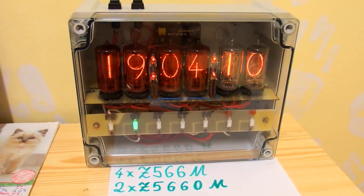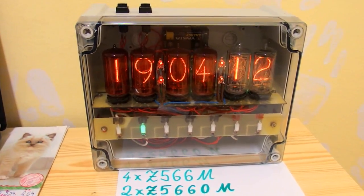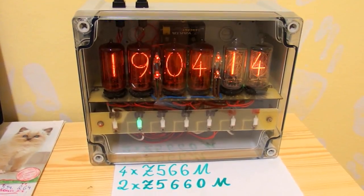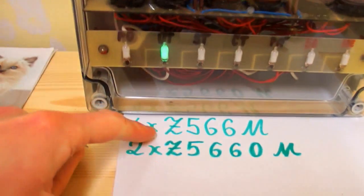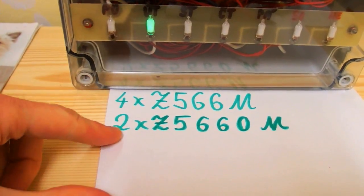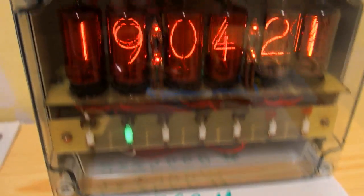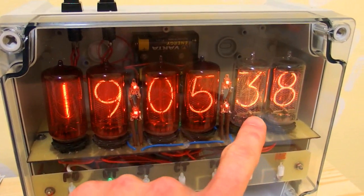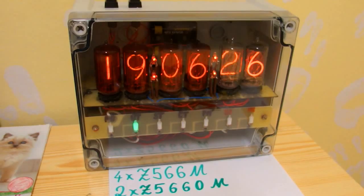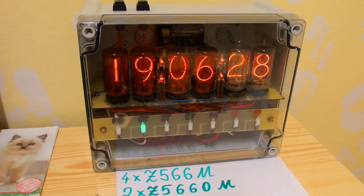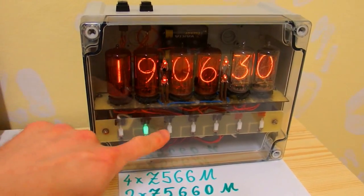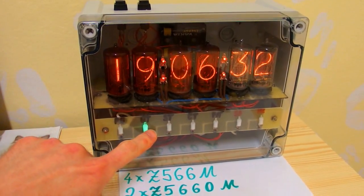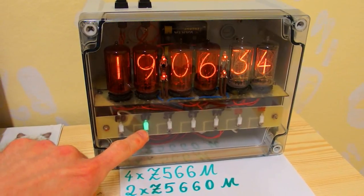And this is the second of my Nixie clocks and my biggest one. It has four times Z566M and two times Z566OM tubes. By and large they are the same tubes but the seconds have no red paint on it. And the functionality is almost the same as the first clock but I have added seven green neon tubes to indicate the day of the week.